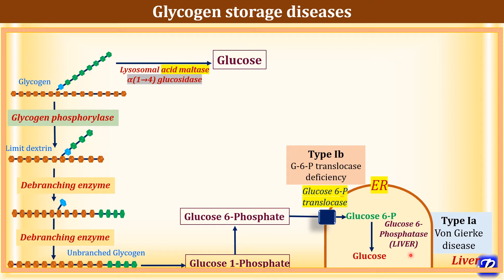Type 1B glycogen storage disease is due to glucose 6-phosphate translocase deficiency. In addition to the clinical features of Von Gox disease, it also has neutropenia, and that's why the patient suffers from various severe infections. Type 2 glycogen storage disease is called Pompe's disease and it is due to defect in enzyme lysosomal acid maltase, with accumulation of glycogen in the lysosomes. It is also autosomal recessive; the accumulated glycogen is of normal structure. It affects liver, heart, smooth and striated muscle, and the patient can have cardiomegaly and muscle hypotonia, but there is no hypoglycemia.